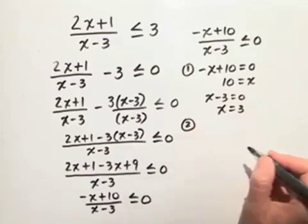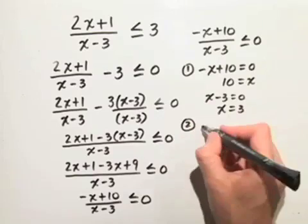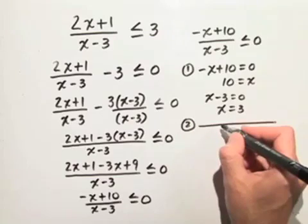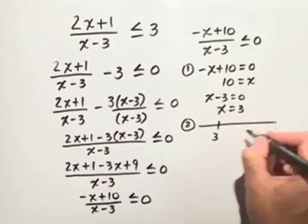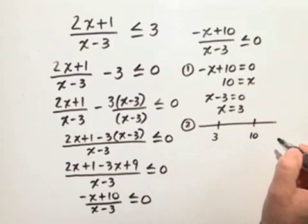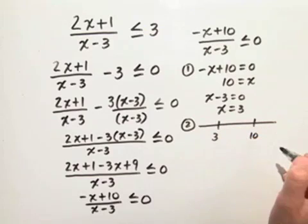So in step 2, we need to go to a number line. On the number line, we'll put our boundary points. We have 3 and we have 10. We have 3 different intervals at which to look now.